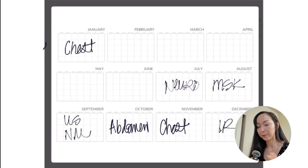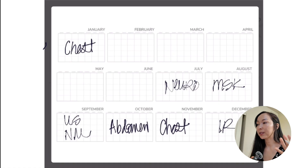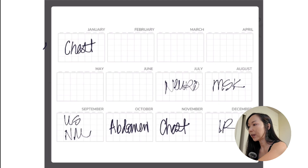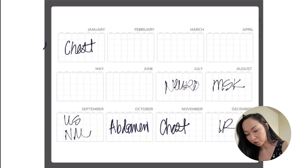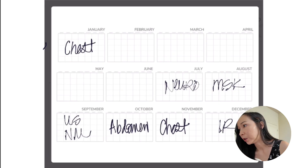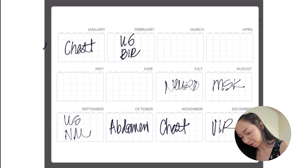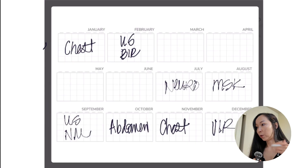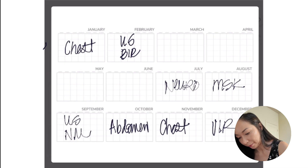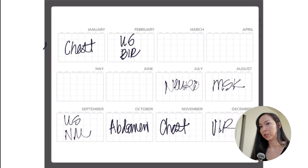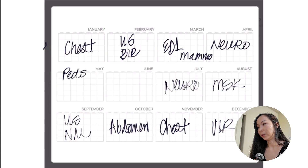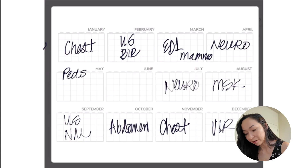I think the IR rotation is going to be a little more demanding in terms of hours. That's when we'll be doing a lot of line placements and biopsies. In January I do another four-week rotation in chest. In February I'll do two two-week rotations in ultrasound and body IR. Then the rest of February and March I'll be doing an ED rotation, which is my first rotation in emergency imaging where I'll have to work a swing shift.